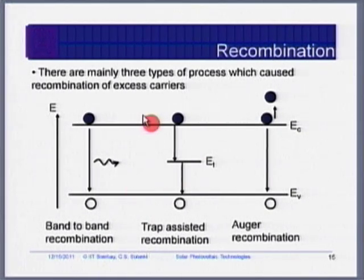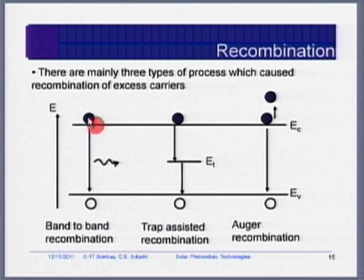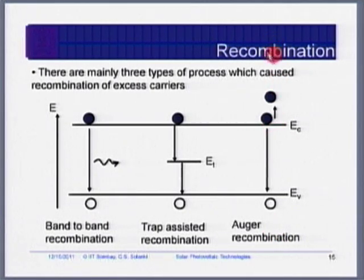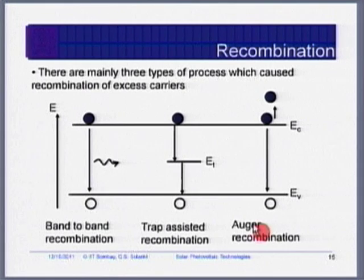There are various ways recombination takes place. One is band-to-band recombination, where the electron comes directly from conduction band to valence band and gives away energy as light. Another is Auger recombination, in which the electron recombines and gives its energy to another electron which goes to a higher energy level. This process was discovered by a scientist called Auger.